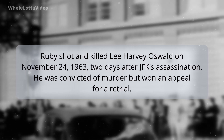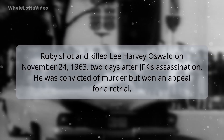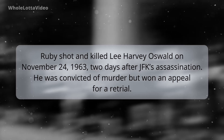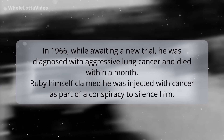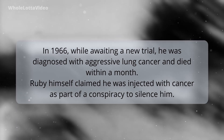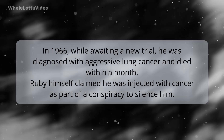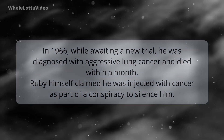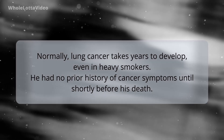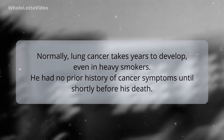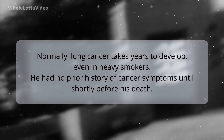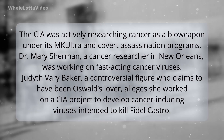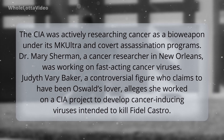Ruby shot and killed Lee Harvey Oswald on November 24th, 1963, two days after JFK's assassination. He was convicted of murder but won an appeal for a retrial. In 1966, while awaiting a new trial, he was diagnosed with aggressive lung cancer and died within a month. Ruby himself claimed he was injected with cancer as part of a conspiracy to silence him. Normally, lung cancer takes years to develop, even in heavy smokers, and he had no prior history of cancer symptoms until shortly before his death.